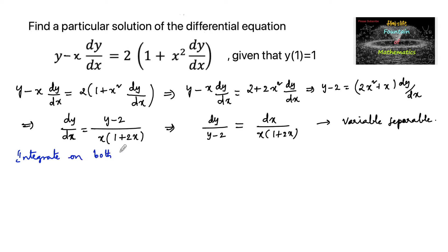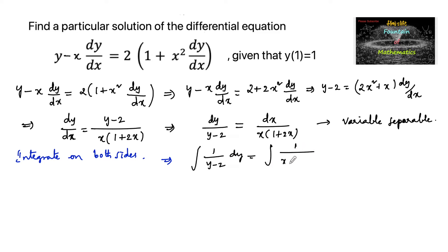Integrating on both sides, we have integral of 1 upon y minus 2 dy equals integral of 1 upon x times 2x plus 1 dx. The left side integral is straightforward, but for the right side integral let us use partial fractions — let us do it separately.